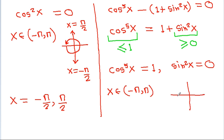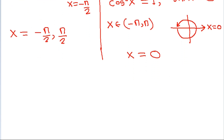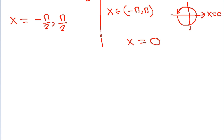Between minus pi to pi, at x = 0, cos⁵x = 1 and sin²x = 0. So from this case we get x = 0. Hence the complete set of solutions is x = −π/2, x = 0, and x = π/2.